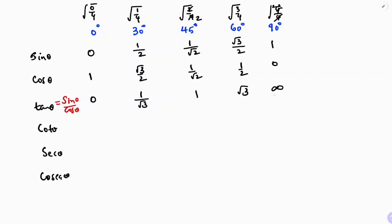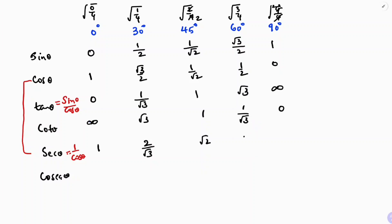Cot is just the reverse of tan: not defined, root 3, 1, 1 by root 3, and 0. Sec is the reciprocal of cos. Cos values were 1, root 3 by 2, 1 by root 2, 1 by 2, and 0. Their reciprocals give sec values: 1, 2 by root 3, root 2, 2, and not defined. Cosec values written in reverse give: not defined, 2, root 2, 2 by root 3, and 1.